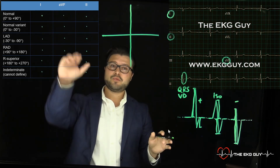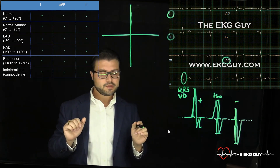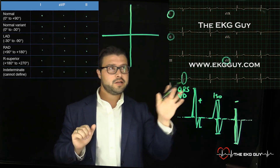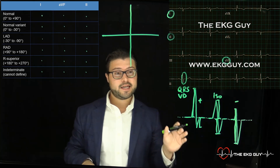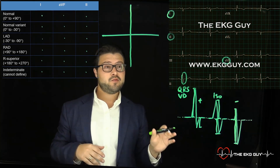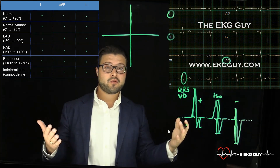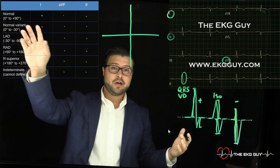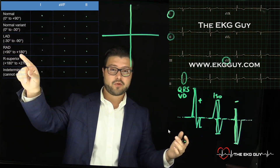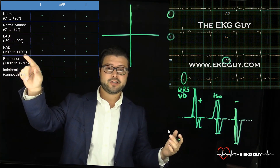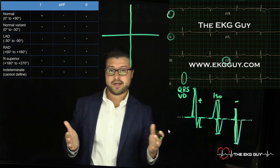As we go through this we'll start filling out the table. Go ahead and try this example and see what you get. Essentially you're looking for one of these choices: normal, normal variant, left axis deviation, right axis deviation, right superior axis, or an indeterminate axis. Take a minute and go through that right now.